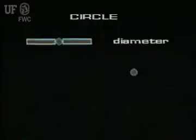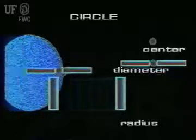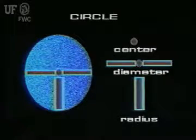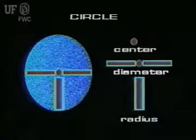Before we learn to calculate the area of a circular pond, we need to learn or review the parts of a circle. The parts of a circle that will be used to calculate its area are the center, the diameter, and the radius.